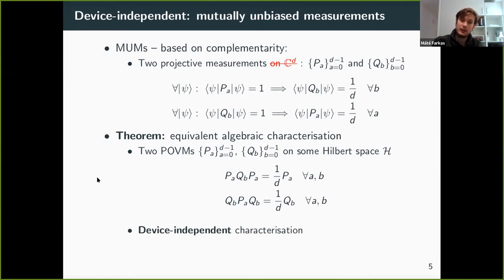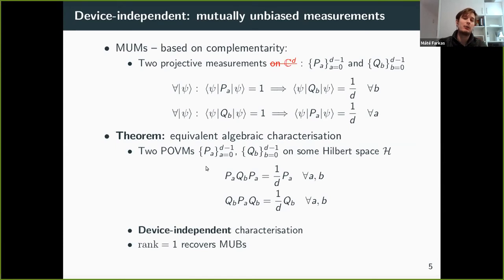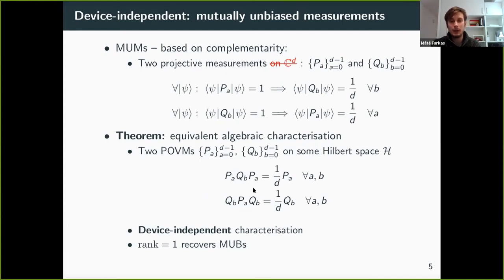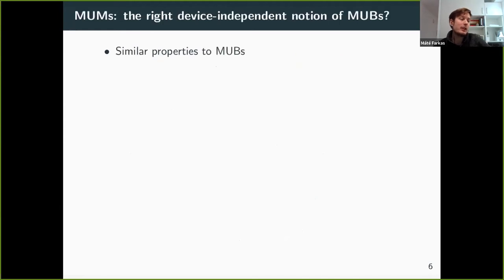This algebraic characterization only refers to the POVM elements and doesn't refer to the Hilbert space dimension — it captures complementarity. So this is a device-independent characterization. One can see that if we take these measurements to be rank-one, we get back the MUB definition. From these relations you can already see that the measurements are projective: summing over B on the left-hand side gives P_A squared, while the right-hand side gives D times P_A, so P is projective. Similarly Q is projective. Plugging in a rank-one projector, you exactly recover the MUB definition.